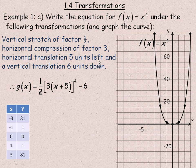The horizontal compression of factor 3 means the 3 is multiplied by the expression with x. It looks opposite of what it's supposed to be: if the x values are divided by 3, the reason there's a 3 in the equation is that to get the same y value you need to multiply the x's by 3. The horizontal translation moves 5 units left, so I'm subtracting 5 from all the x's. In the equation, to end up with the same y values, you compensate by adding 5 to the x's.